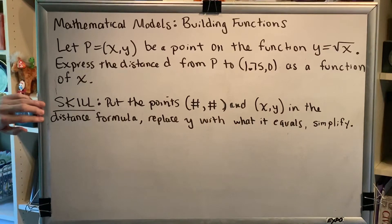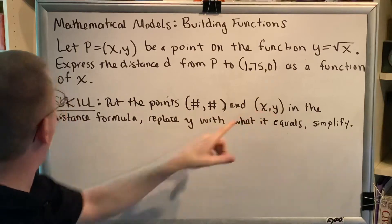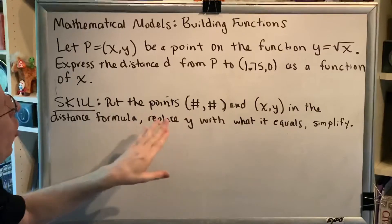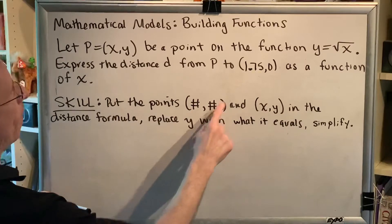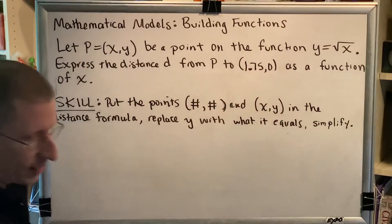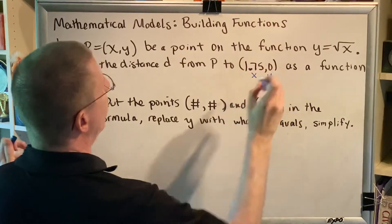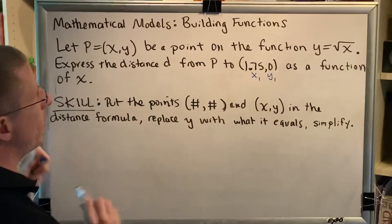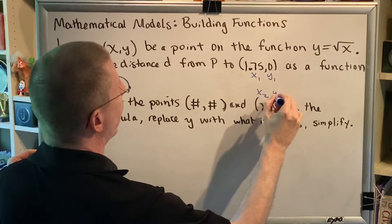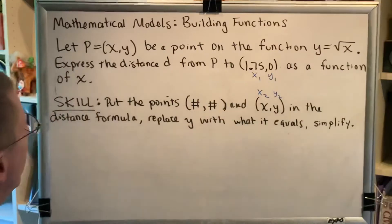Okay, the skill part needed to solve this problem goes like this: Put the points (number, number) and (x,y) in the distance formula, replace y with what it equals, and simplify. So for this problem (1.75,0) is going to be our x₁ and our y₁ that we'll put in the distance formula, and then (x,y) is going to be our x₂, y₂ that we're going to put in our distance formula, which means our distance formula is going to have both letters and numbers in it and that's okay.